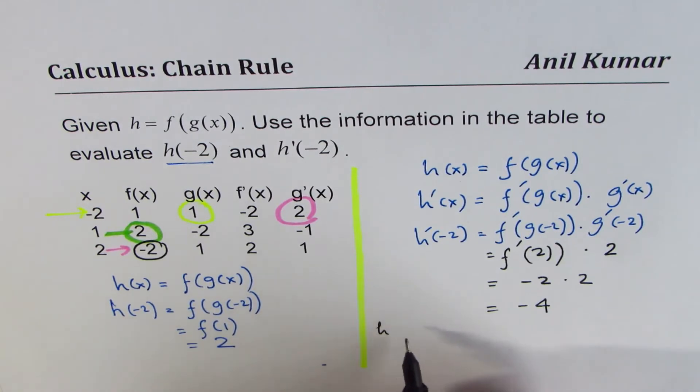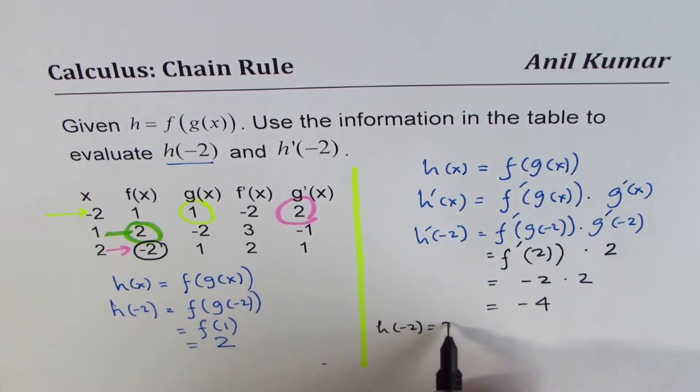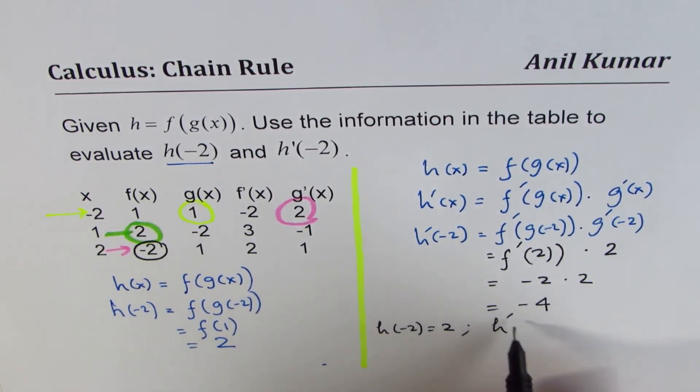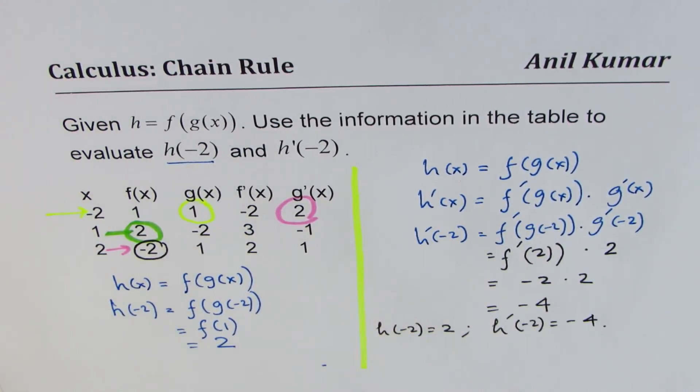What we got here is that h of minus 2 is equal to 2, and the derivative of this function at minus 2 is minus 4. I hope that helps. You can always share and subscribe my videos. Feel free to post questions. Thank you and all the best.